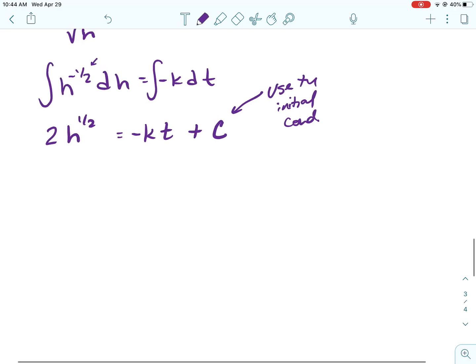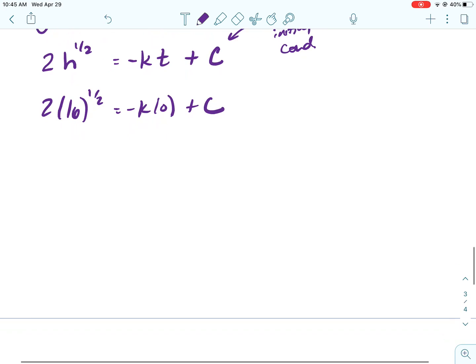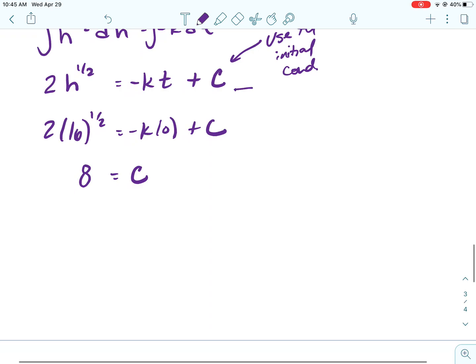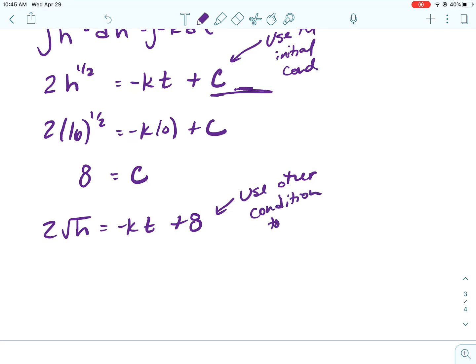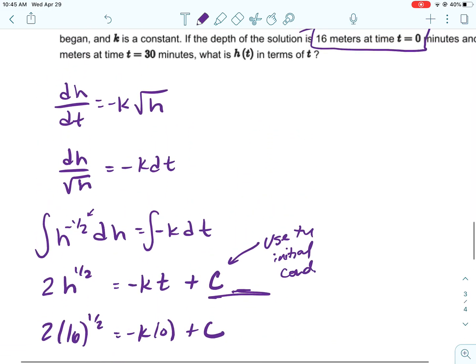So now we're ready to use the initial condition. So our initial condition is this right here. The depth is 16 at time 0. So we're going to put 0 in for T and 16 in for H. So 2 times, basically, the square root of 16 is going to be 8. That's because it's 2 times 4. So C is 8. So go back to exactly where we were when I wrote to use the initial condition and put 8 in.